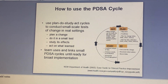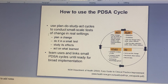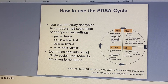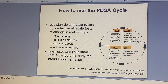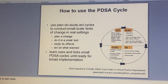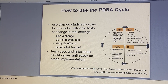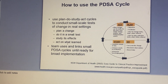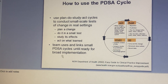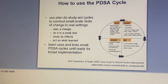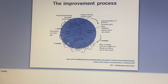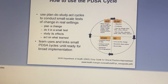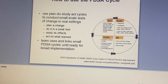Now let's look at how to use the PDSA cycle. We use the Plan-Do-Study-Act cycle to conduct small-scale tests. First we plan a change, then we test it, study it, and ultimately take the positive changes to act on and employ them in bigger projects. At the beginning we have to test on a small scale — plan a change, do it in a small test, study its effects, and act on what was learned. The team uses and links small PDSA cycles until ready for broad implementation.